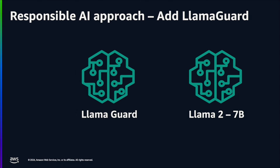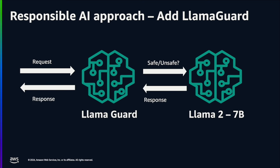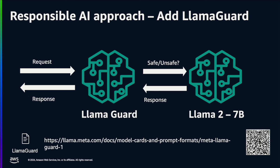Instead of sending it directly to Llama2, you'll first send your request to LlamaGuard. LlamaGuard will classify whether that incoming request is safe or unsafe. And then, depending on your organization's requirements, we'll send it across to the real large language model, the Llama2 one, and you can get your response and send it back to your calling service. I urge you to take a look at the model card and prompt formats for LlamaGuard. Let's jump into the code and see how we can implement this on a SageMaker endpoint with inference components.